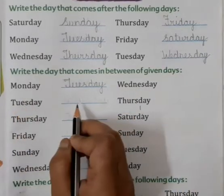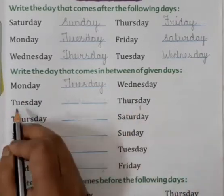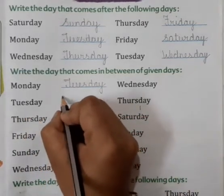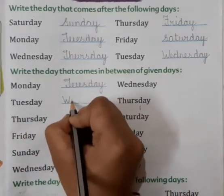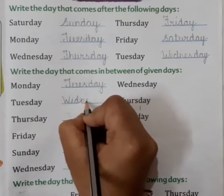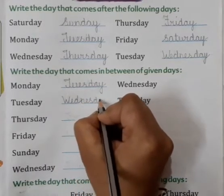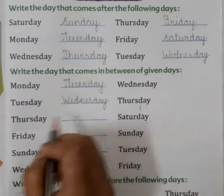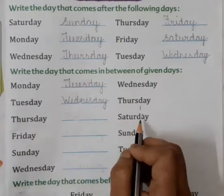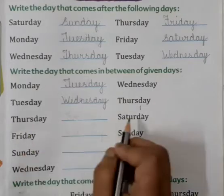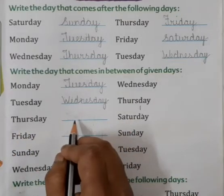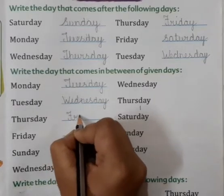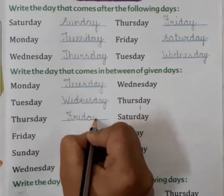Now next is Tuesday, blank, Thursday — Wednesday ke beech mein aata hai Wednesday. We will write W-E-D-N-E-S-D-A-Y. Now next is Thursday, blank, Saturday — Thursday or Saturday ke beech mein Friday aata hai. We will write F-R-I-D-A-Y, Friday.